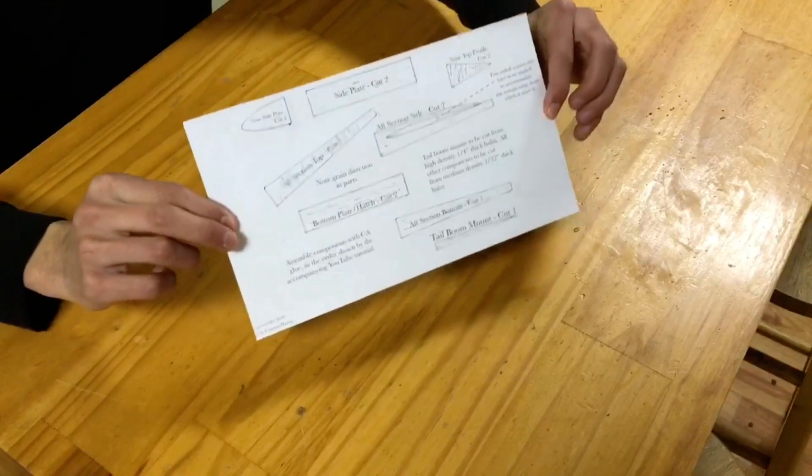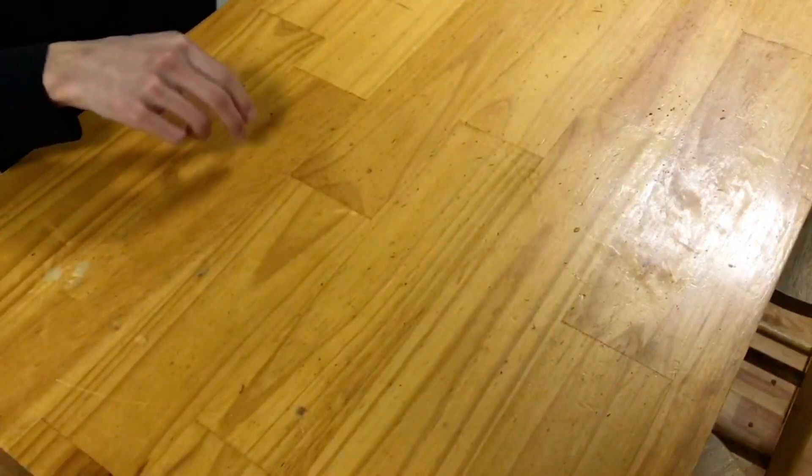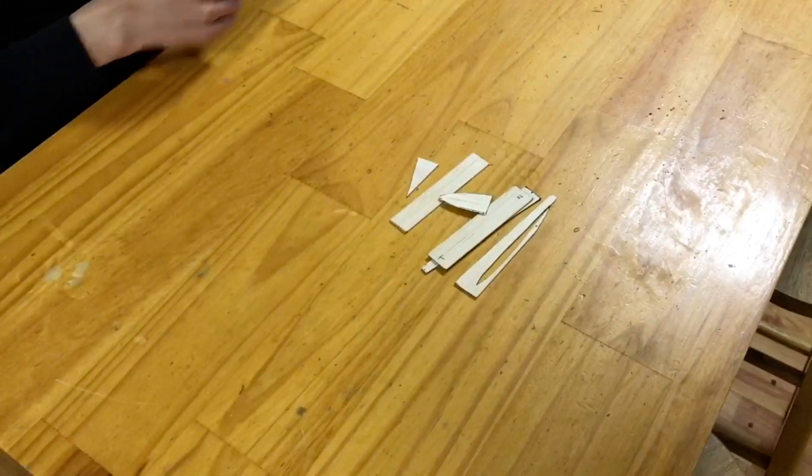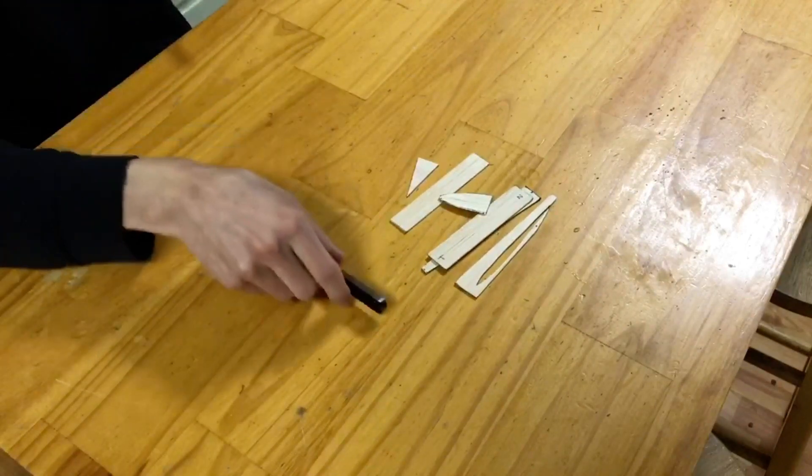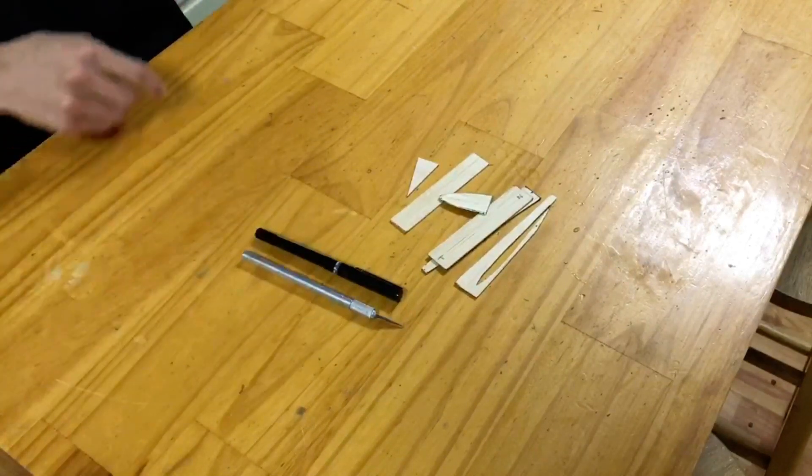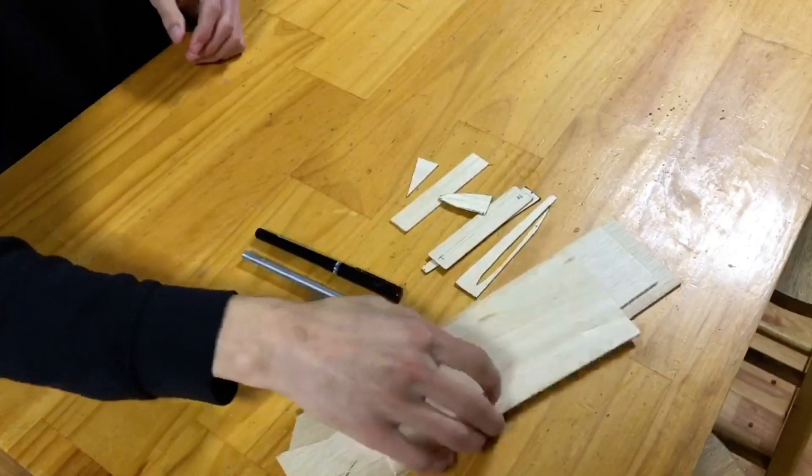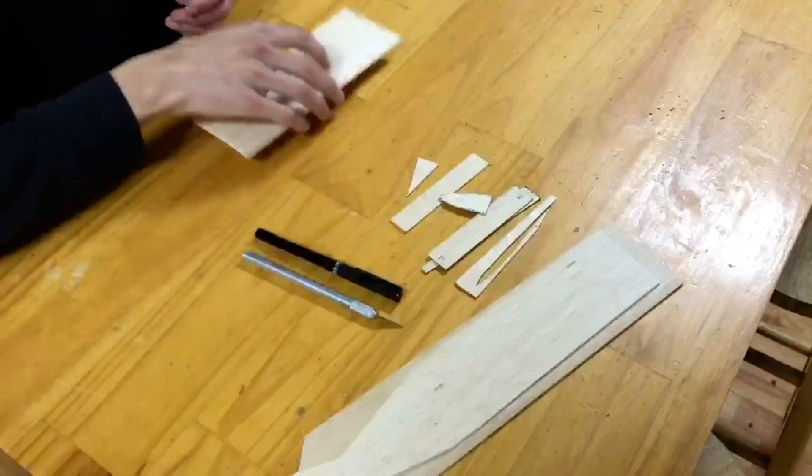You'll first need to cut out the outlines of the pieces in the plan to create your templates. In my case I have a wooden set of templates, but both wooden and paper templates will serve the same function. We'll now take our pen and some 3/32 inch thick balsa wood, and begin marking out the parts on the balsa wood using the templates.